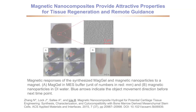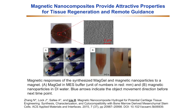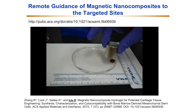Another example I would like to share is magnetic nanocomposites. Magnetic nanocomposites could provide attractive properties for tissue regeneration and remote guidance. We created a model of magnetic nanocomposites composed of magnetic nanoparticles and a biodegradable biocompatible hydrogel — we call them magnetic gels. As the video on the left shows, we could guide this magnetic gel using a magnet.